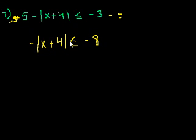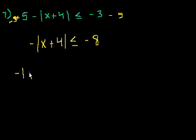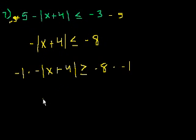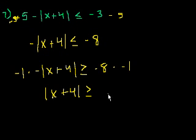Now, when you multiply or divide both sides of an inequality by a negative number, you must switch the inequality sign. Multiplying both sides by negative 1 and switching the inequality, we get the absolute value of (x plus 4) greater than or equal to negative 8 times negative 1, which is 8. So we have the absolute value of (x plus 4) is greater than or equal to 8.